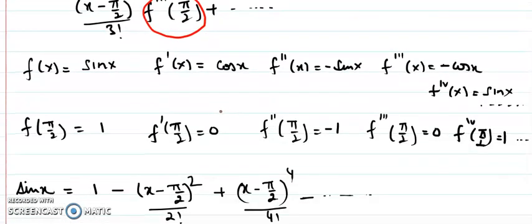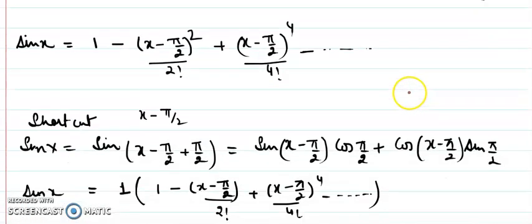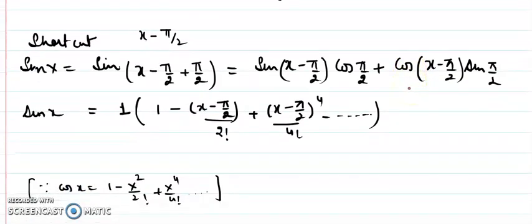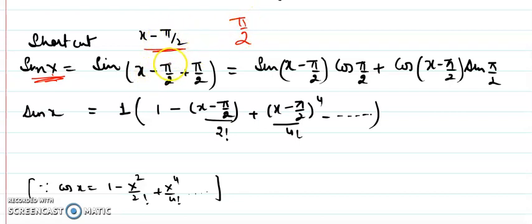Now, if you want to write this series quickly, there is a shortcut technique. All the standard Maclaurin series formulas should be handy. The idea is: since we want powers of (x minus pi/2), we write sin x as sin((x minus pi/2) plus pi/2), adding and subtracting pi/2 to get the desired form.